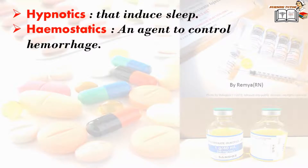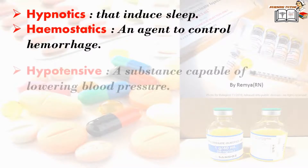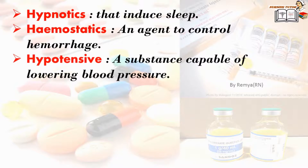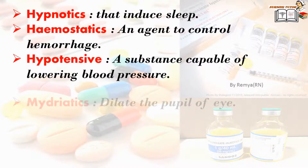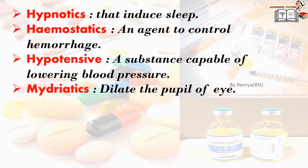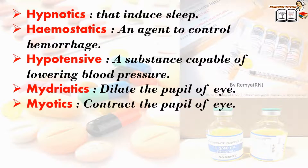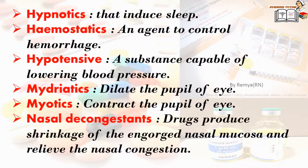Hemostatics are the agents used to control hemorrhage. Hypotensive drugs are substances capable of lowering the blood pressure. Mydriatics are the drugs used to dilate the pupil of the eye. Miotics contract the pupil of the eye.